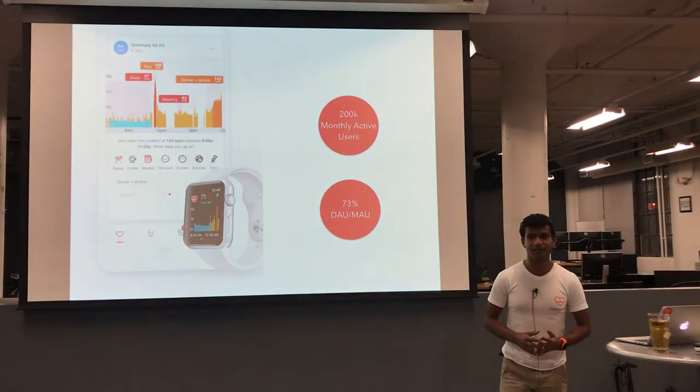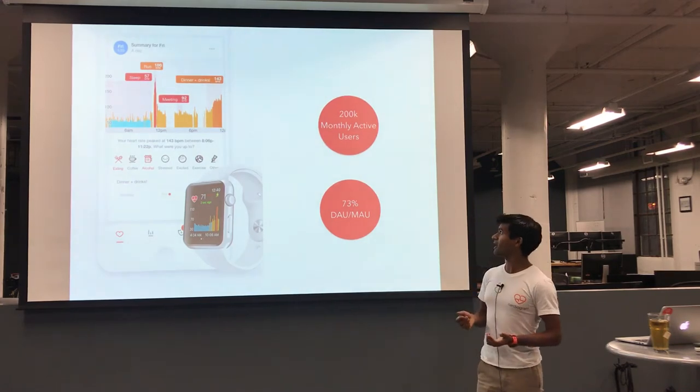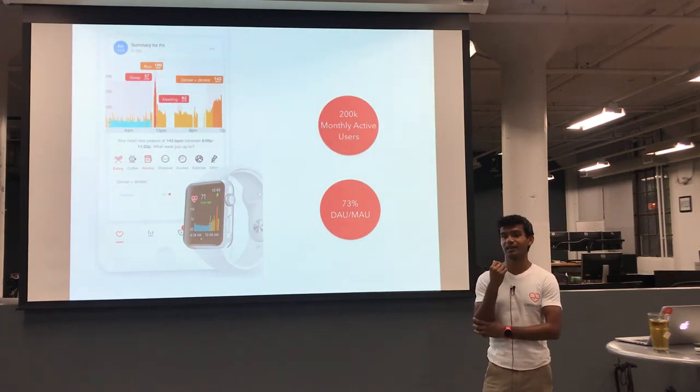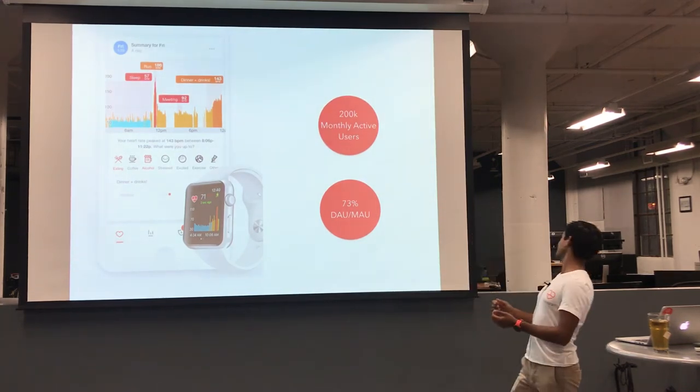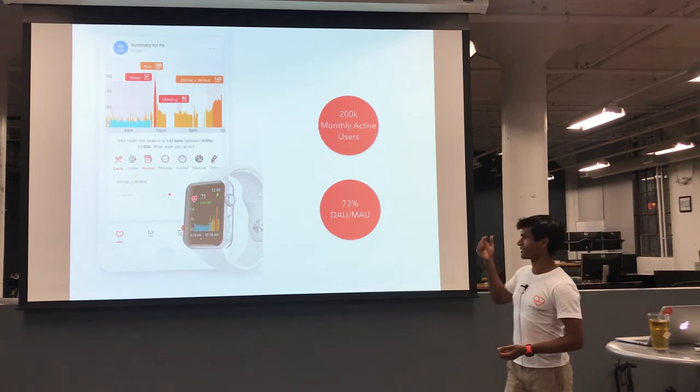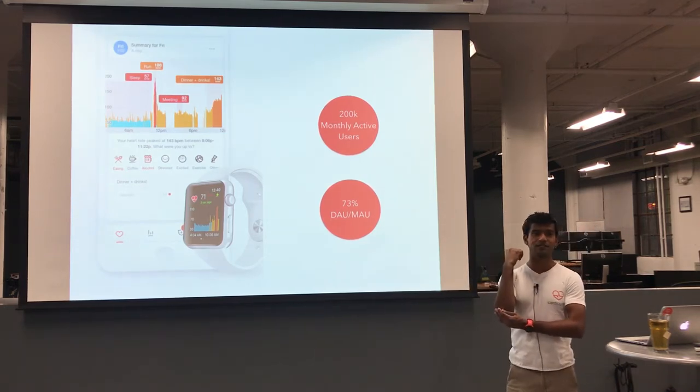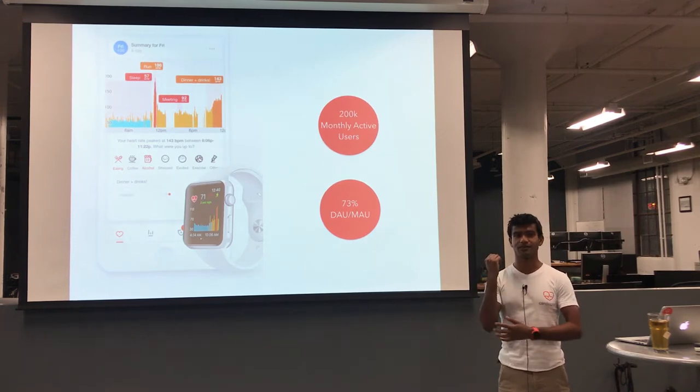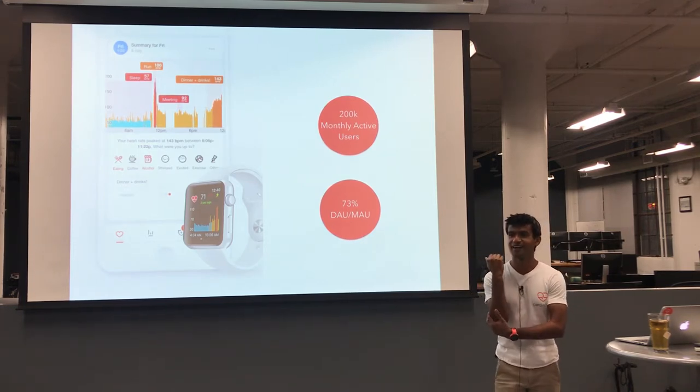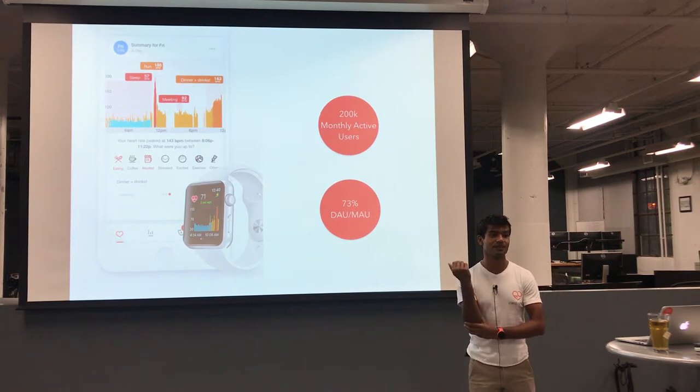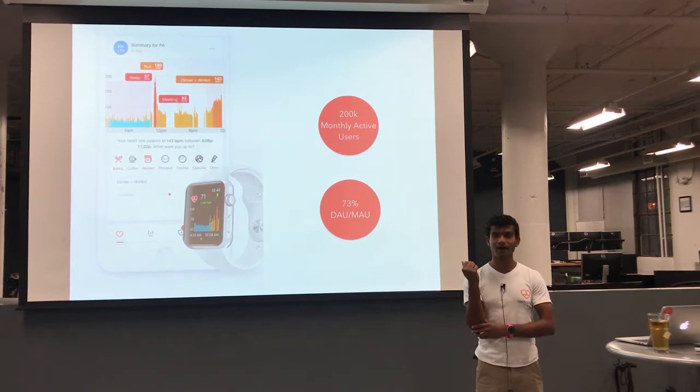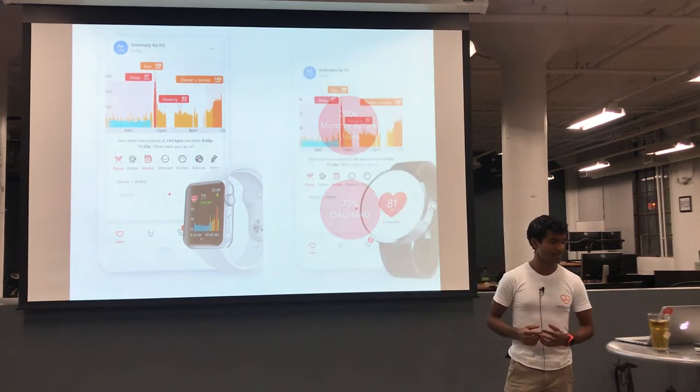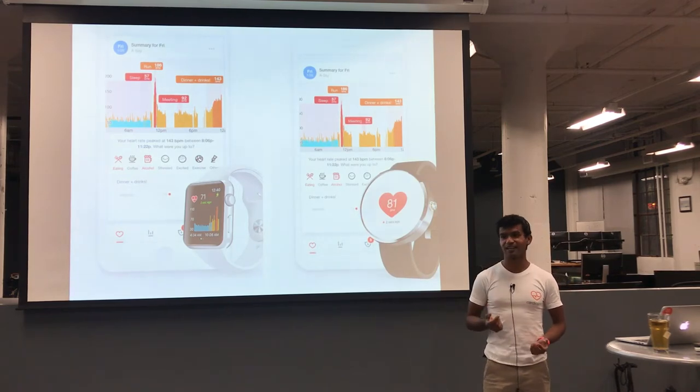If anyone here has seen Big Hero 6, what we're trying to do is transform your smartwatch into a personal healthcare companion. So we're live right now on the iOS App Store. As of this week, we have 200,000 monthly active users. Our DAU to MAU ratio is pretty good. We're at 73%, which is higher than Facebook even. And the really exciting news this week is that we launched our alpha on Android. So we now support cross-platform Android and iOS.